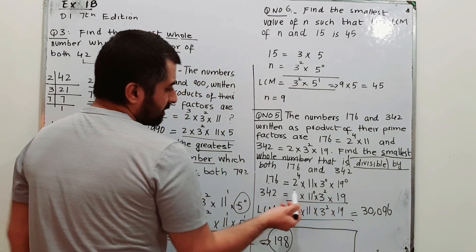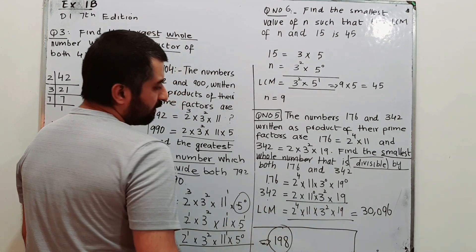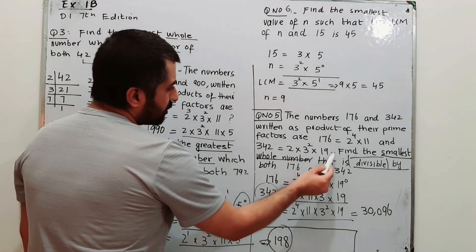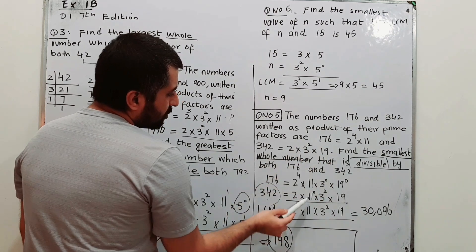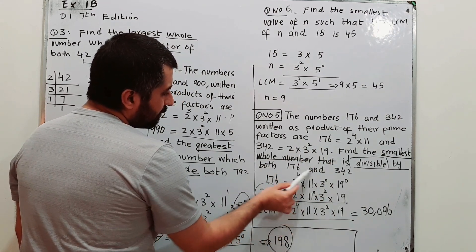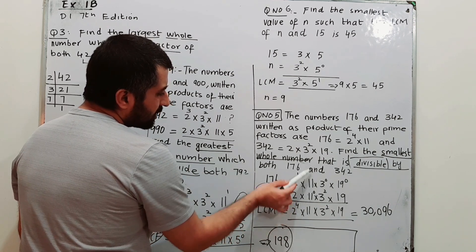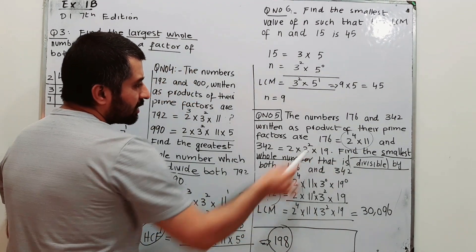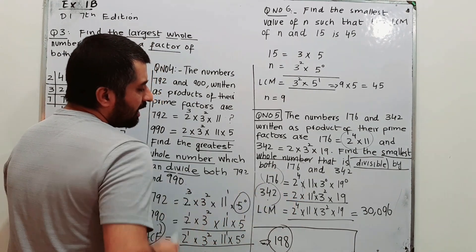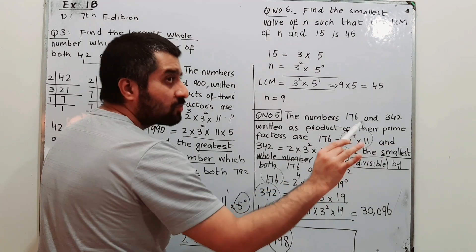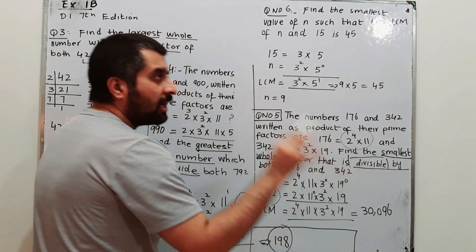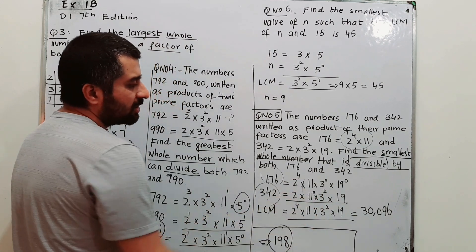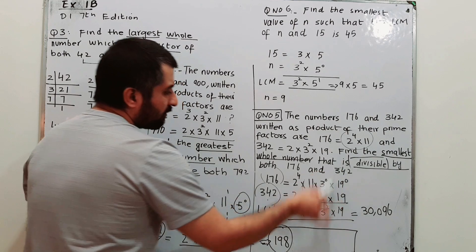176 and 342 are set up in columns. 342 doesn't have any 11 as a factor, so 11⁰ is inserted to complete the column of 11. Similarly, 176 doesn't have any 3, so 3⁰ is inserted — since 3⁰ = 1, and 1 is a factor of 176, there's no issue. 19⁰ is also inserted to complete the column of 19.